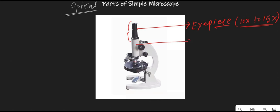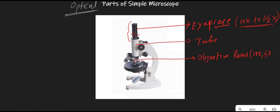The second optical part is the tube, which provides support to the microscope and holds the eyepiece and the objective lens. The next part is the objective lens. There are typically three objective lenses with magnifications of 10x, 40x, and 100x, and they are color coded. The lower power lenses are the shortest and the highest power lenses are the longest.